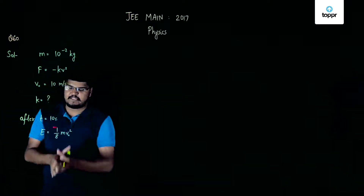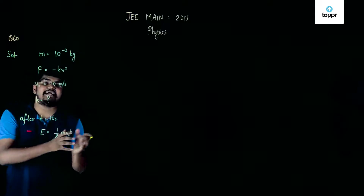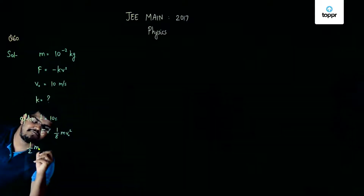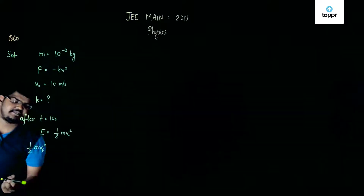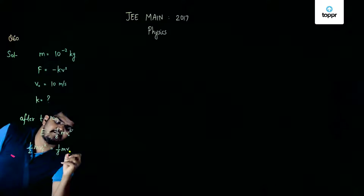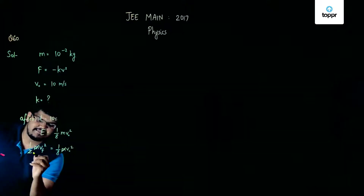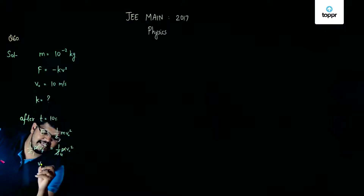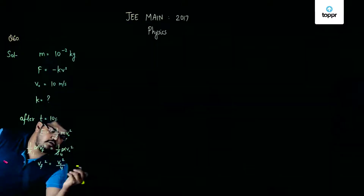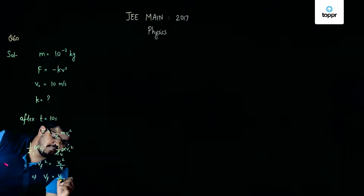Now, this energy will actually be the kinetic energy. So the kinetic energy will be (1/2)mvf², which is the final velocity of this object, and this is equal to (1/8)mv₀². If we cancel these common values, then vf² comes out to be v₀²/4, and thus vf = v₀/2.